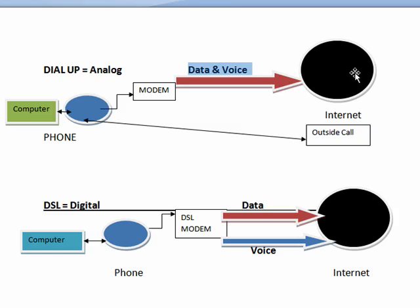Now those of you who remembered using dial-up — you had an outside call come in, it would break off your connection to the internet because the phone line took precedence. In DSL, it's digital, so the computer connects to the phone line that connects to a DSL modem that has filters in place, because voice and data are at different frequencies. So your data connection is on the same line as your phone, but it's traveling at different frequencies, so the data goes out to the internet and back and forth, and your voice can go back and forth at the same time.